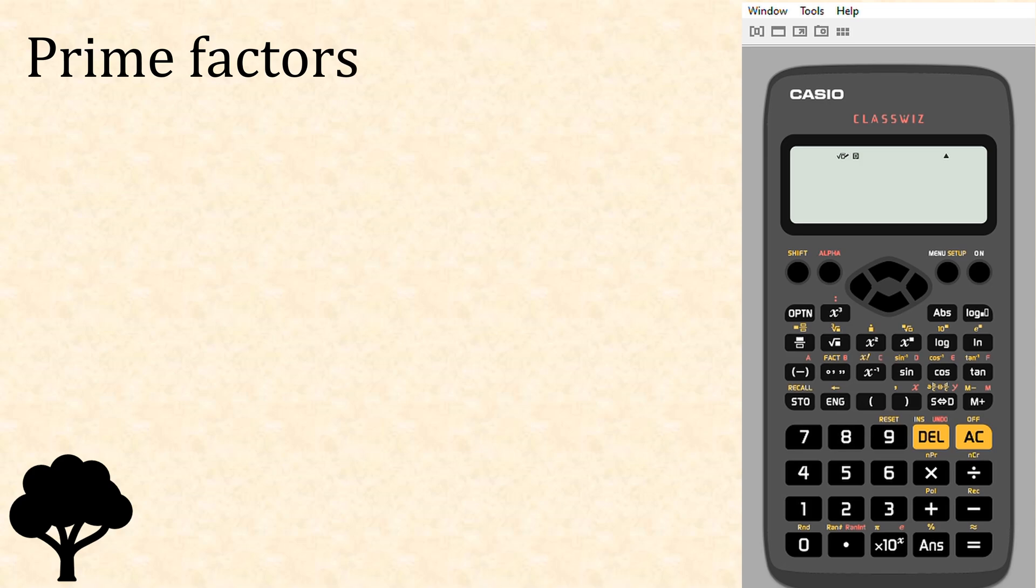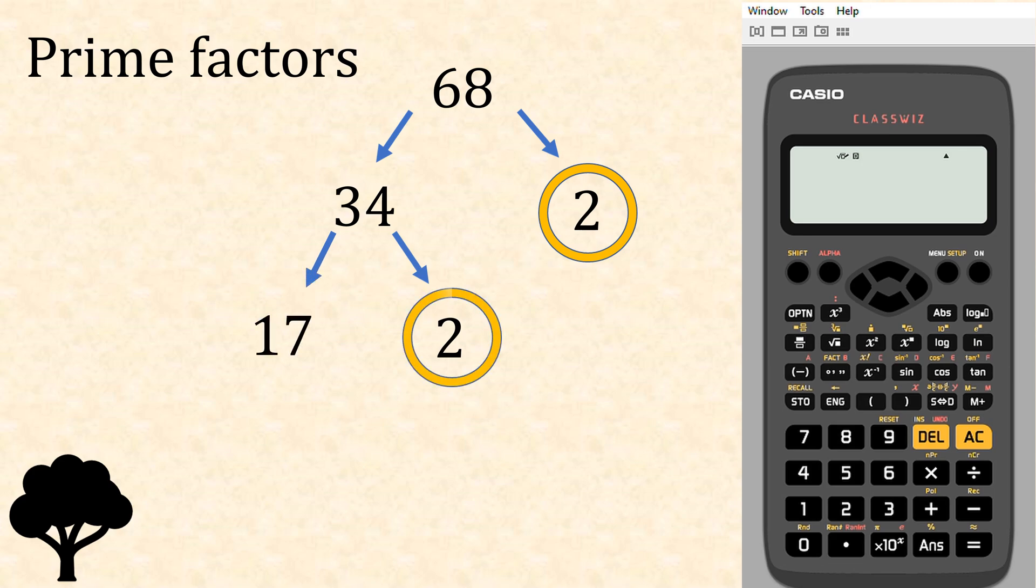Let's look at 68. If we don't know the factors of that, we're going to divide it by 2, which gives us 34. Now again, let's divide that by 2, which gives us 17. As you can see, these are all prime factors—we can't get any smaller.